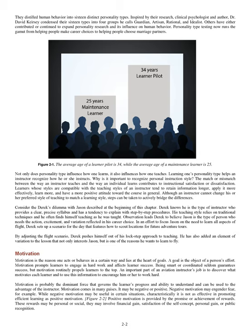Consider Derek's dilemma with Jason. Derek knows he is the type of instructor who provides a clear, precise syllabus and has a tendency to explain with step-by-step procedures. His teaching style relies on traditional techniques and he often finds himself teaching as he was taught. Observation leads Derek to believe Jason is the type of person who needs the action, excitement, and variation reflected in his career choice. In an effort to focus Jason on the need to learn all aspects of flight, Derek sets up a scenario that features how to scout locations for future adventure tours, pushing himself out of his lockstep approach to teaching.